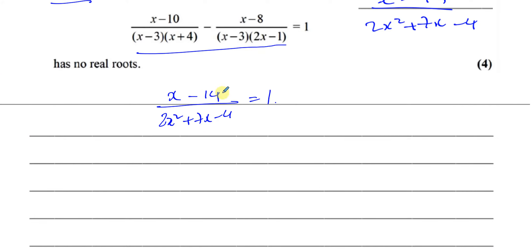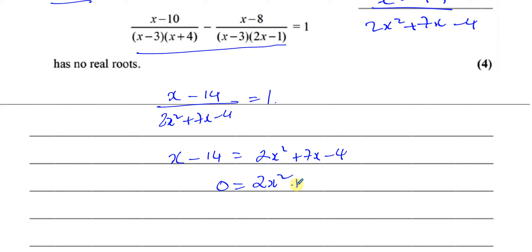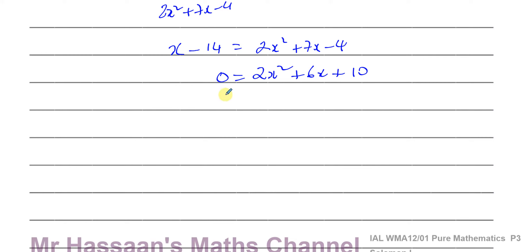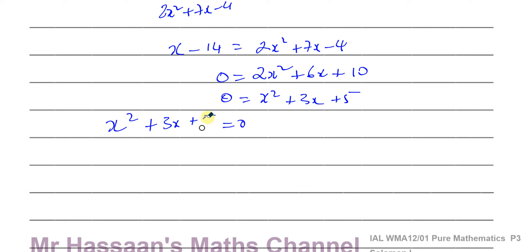To solve, I get rid of the fraction by multiplying both sides by 2x squared plus 7x minus 4, giving x minus 14 equals 2x squared plus 7x minus 4. Bringing all terms to one side: 2x squared plus 6x plus 10 equals 0. Dividing by 2 gives x squared plus 3x plus 5 equals 0. So I need to show this quadratic equation has no real roots.